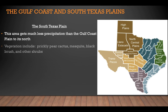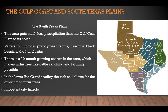The last region of Texas — the South Texas Plains — gets much less rainfall than areas to its north. Vegetation includes prickly pear, cactus, mesquite, black brush, and other shrubs. There is a 10-month growing season in the area, which makes industries like cattle ranching and farming possible. In the lower Rio Grande Valley, the rich soil allows for the growing of citrus trees. An important city of this region is Laredo.